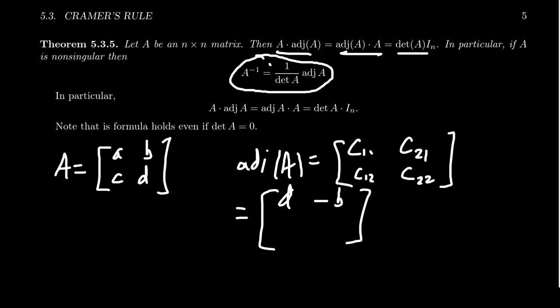The next one, the 1-2 cofactor, take away first row, second column. You're left with a C. But this likewise will have a negative. This is a negative cofactor. So you end up with a negative C right here. And then finally, if you do the 2-2 cofactor, second row, second column, you're left with just an A. That one is positive. So you get the matrix A right here.